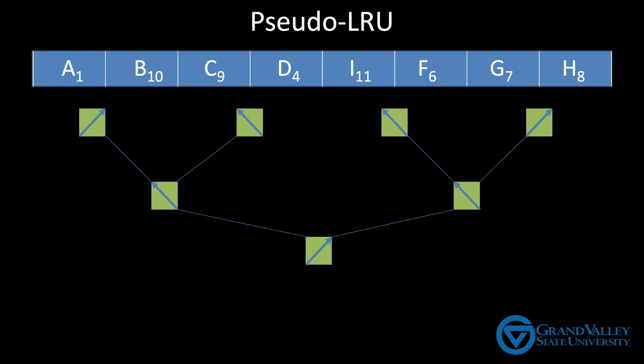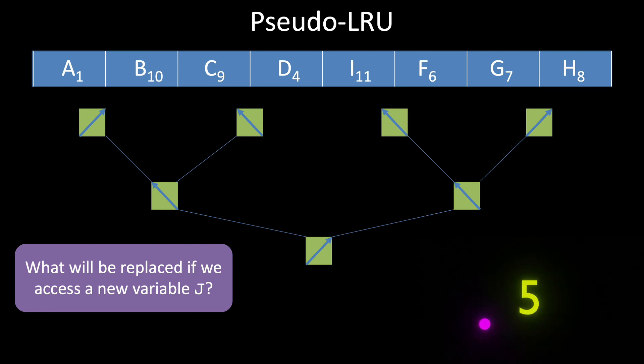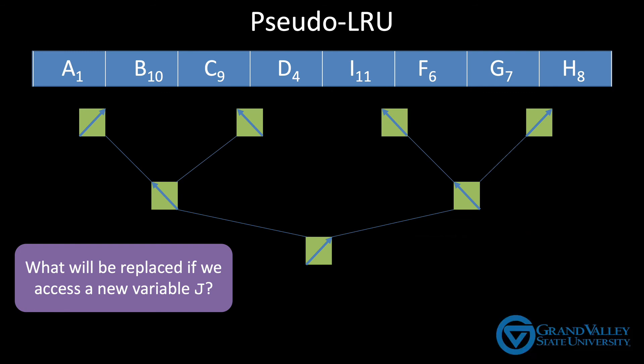Let's do another one. Let's say we want to bring in a new variable J — which block will get replaced? Again, we'll move against the arrows. The most recently accessed block is on the right, so we'll move to the left. Of the four blocks on the left, the most recently accessed would be B, which is to the left, so we'll move to the right. And of those two blocks, C was more recently accessed, so we will evict D and replace D with J.